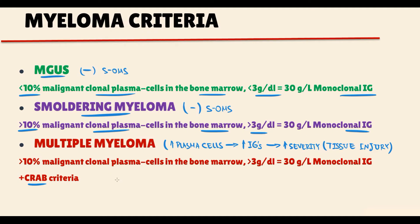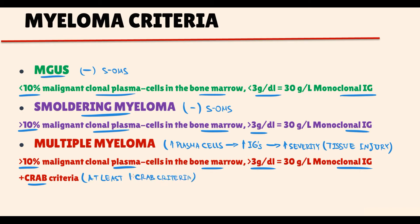A condition characterized by the presence of greater than 10% of clonal plasma cells in the bone marrow, together with at least one of the CRAB criteria, is called multiple myeloma.